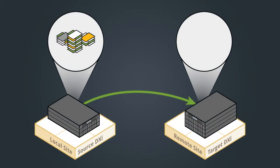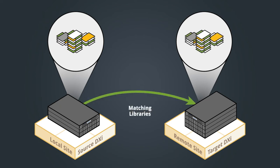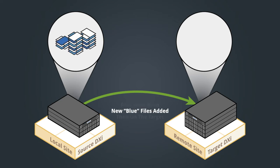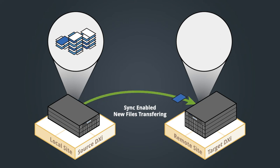Now, with file-based replication configured, replication and recovery occur automatically after a file is closed in a CIFS share. No manual intervention or scheduling is needed. When files are deleted on the source DXi system, they are automatically removed from the target DXi system. When new files are added to the source DXi system, they are automatically added to the target DXi as well.